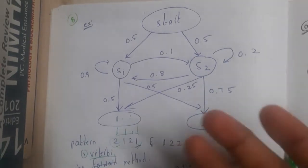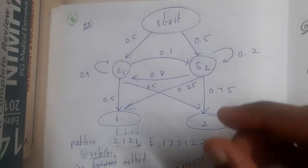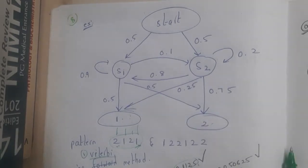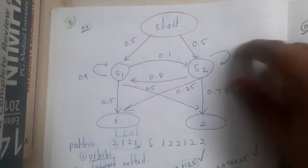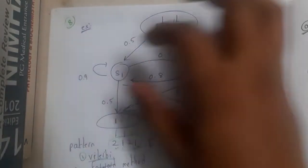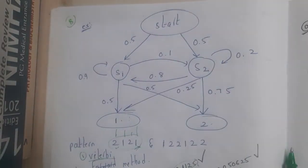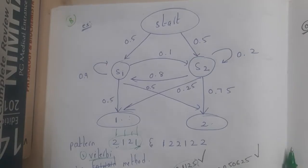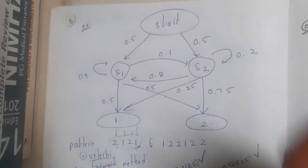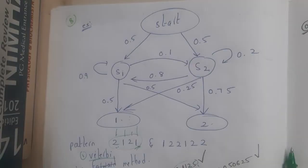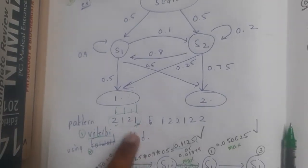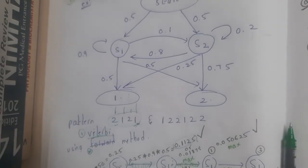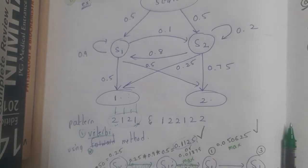Voice recognition, face recognition - everything checks for some patterns. Based on those patterns, if you identify what the inputs are, this concept is called the Hidden Markov Method. In this, we try to find the hidden layers - what the hidden layers are. Basically, at the end they will give you a pattern and you need to find how that pattern can be generated.